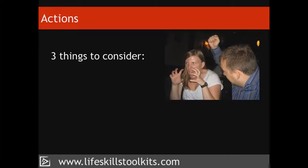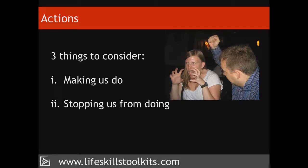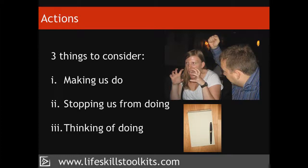There are three things to consider. 1. What kind of things our emotions are making us do right now. 2. What kind of things our emotions are stopping us from doing. And 3. What kind of things our emotions are making us think about doing that we know we should not do. A final reminder: once you've thought through the answer to a question, write it down.